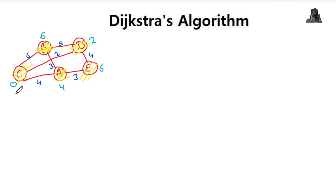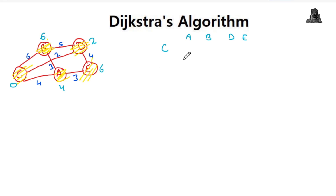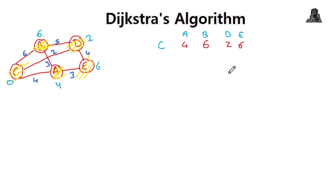These are the final shortest distance values for each vertex from source C. The shortest distance from C to A is 4, from C to B is 6, from C to D is 2, and from C to E is 6. These are the shortest distances from the single source vertex C.